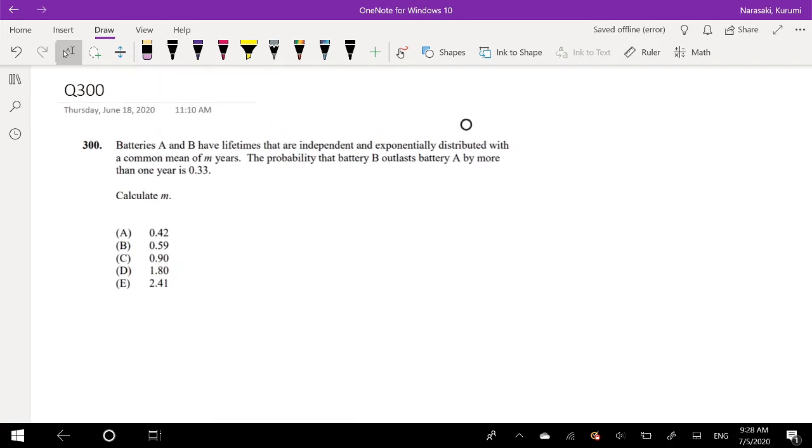Batteries A and B have lifetimes that are independent and exponentially distributed with a common mean of M years. So that just means the probability P(A) is equal to 1 over M, e to the negative A over M. And then for B, it's also going to be the same thing.